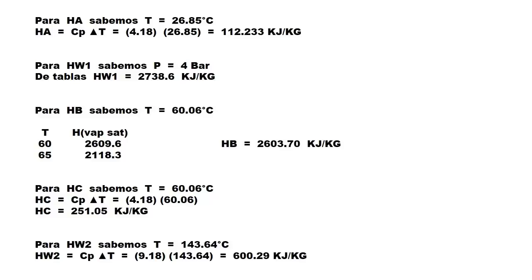Now we calculate the enthalpy of B. We know this stream is at 60.06°C because it exits the evaporator. We go to the temperature tables and look for values at 60°C and 65°C in saturated vapor.